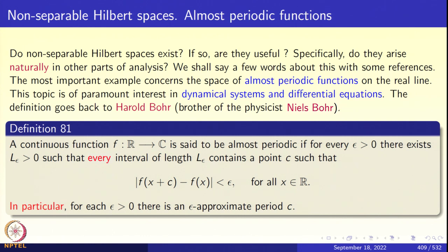In particular, for every epsilon greater than 0 there is an epsilon approximate period. If f(x+c) minus f(x) were 0 for all x, then c would be a period and f would be a periodic function with period c. But here, we only need mod f(x+c) minus f(x) less than epsilon for all x. The function is not periodic but epsilon approximately periodic, and that epsilon approximate period is c. Unlike periodic functions, an epsilon approximate period will not form a subgroup.